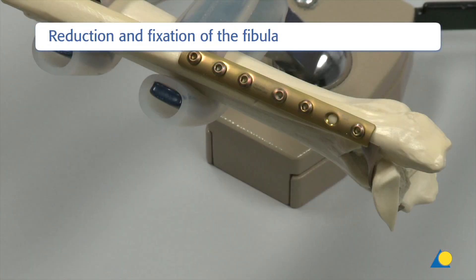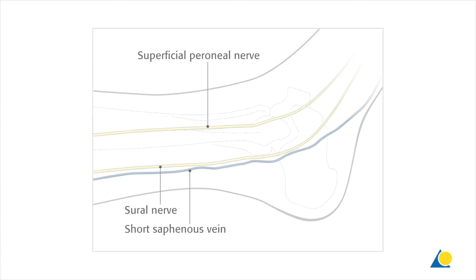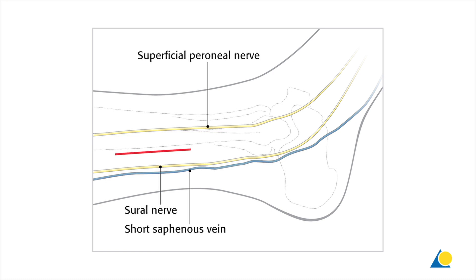The first step is the reduction and fixation of the fibula fracture. The standard approach is a longitudinal lateral incision. A 10 to 15 cm straight lateral incision is made in line with the fibula. Care is taken to avoid injury to the superficial peroneal nerve, which lies very closely anteriorly, especially in the proximal part of the incision.